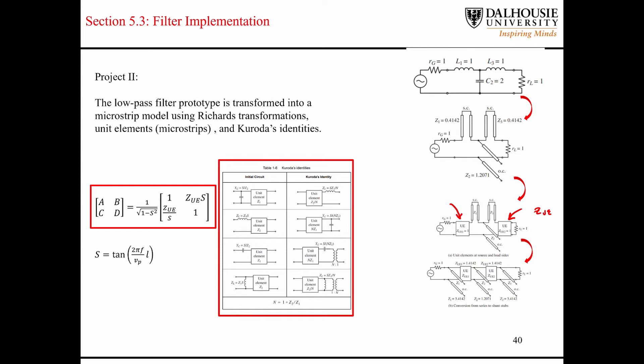We're trying to convert them into open-circuited stubs. So the way that we do that is we insert these little sections of transmission lines with normalized characteristic impedance. And then we use Crota's identities that are shown in this table here. And basically what that does is it scales the characteristic impedance of the transmission line. The little transmission line segments, they kind of move around the circuit.